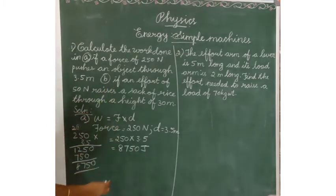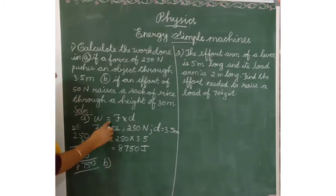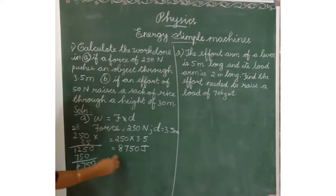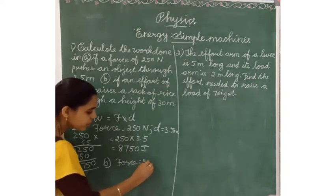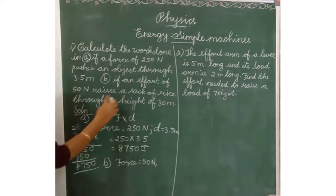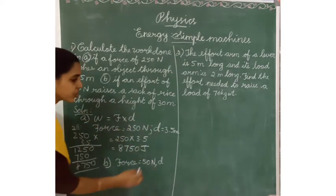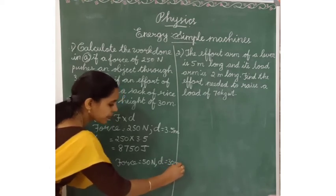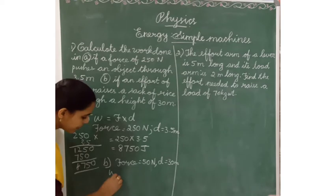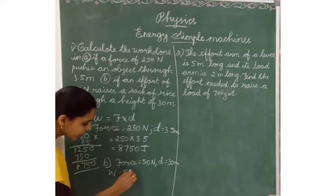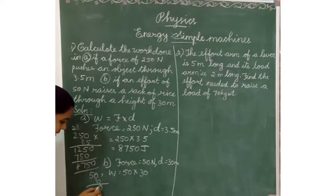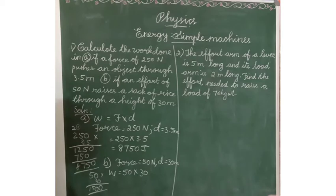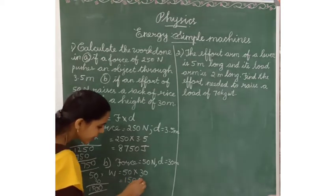Question B: If an effort of 50 Newton raises a sack of rice through a height of 30 meters, find the work done. Using the same formula: Work done = Force × Distance. Force = 50 Newton, Distance = 30 meters. Work done = 50 × 30 = 1500 Joule.